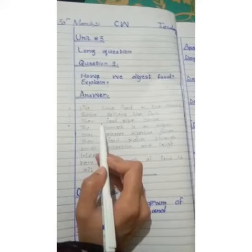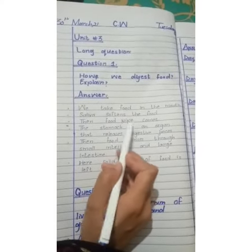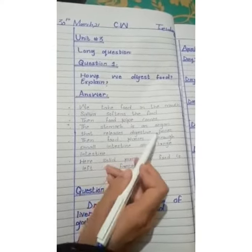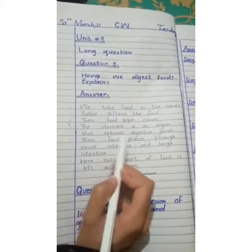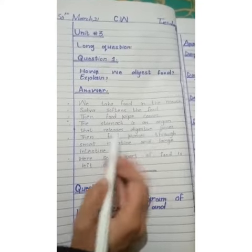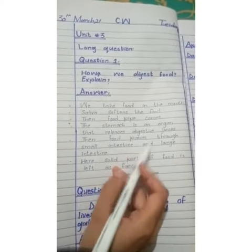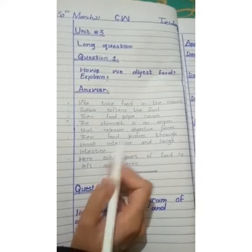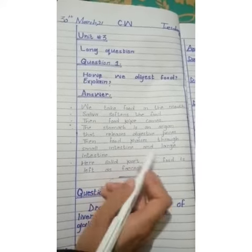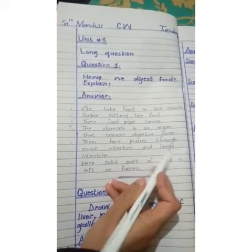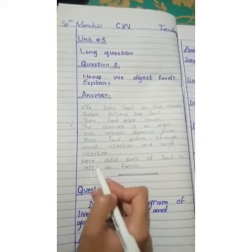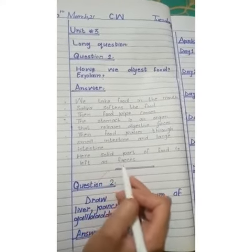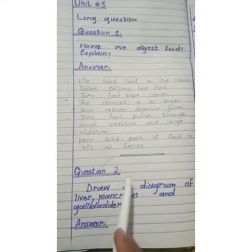Then the food pipe comes — food goes to our food pipe. The stomach is an organ that releases digestive juices. Then food passes through the small intestine and large intestine. In the large intestine, the solid part of food is left as feces.